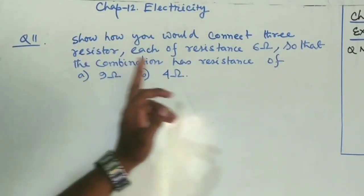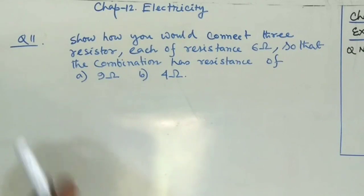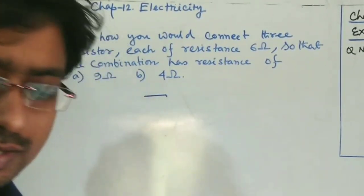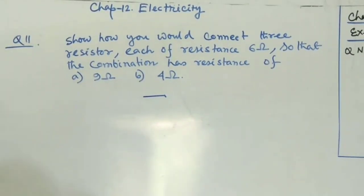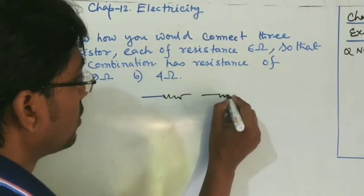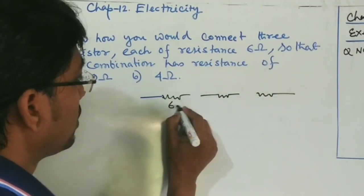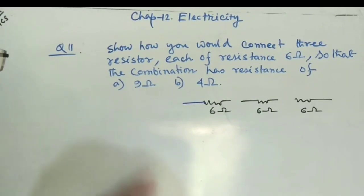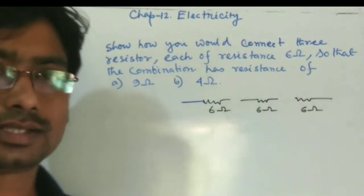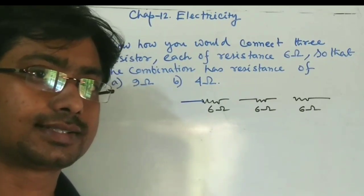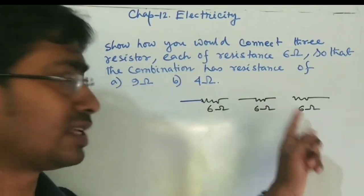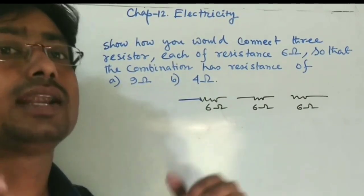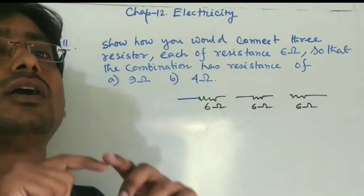Question 11: How would you connect three resistors, each of resistance 6 ohm, so that the combination has resistance of 9 ohm and 4 ohm? Three resistors are given, each of 6 ohm. If all three are connected in series, the equivalent resistance will be 6 + 6 + 6 = 18 ohm.